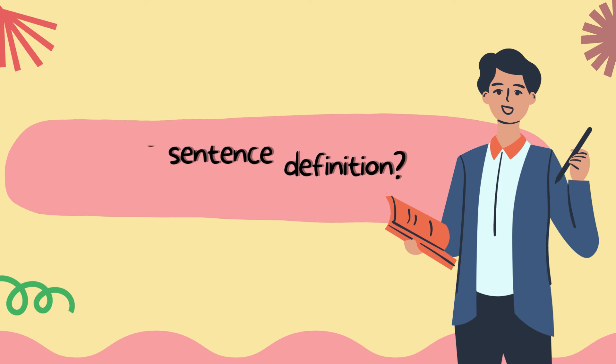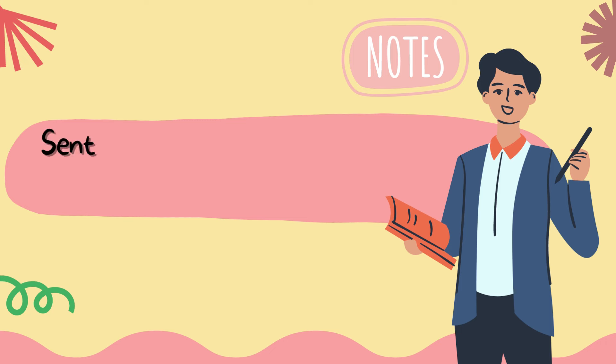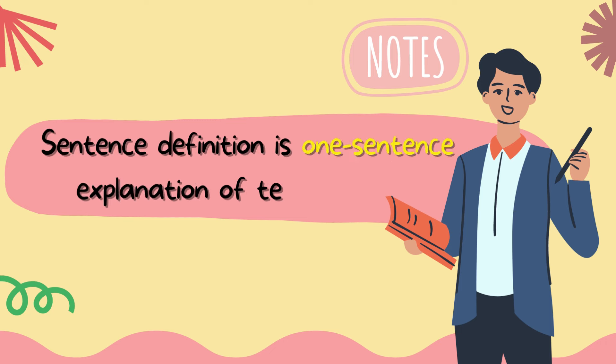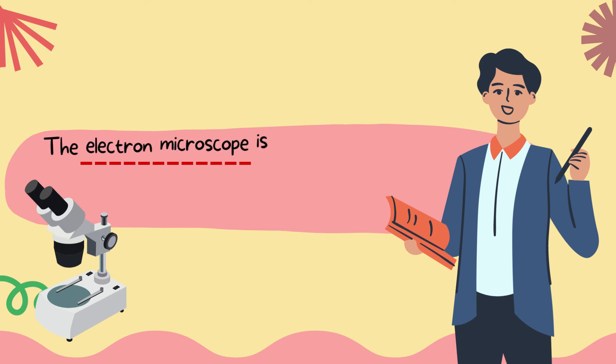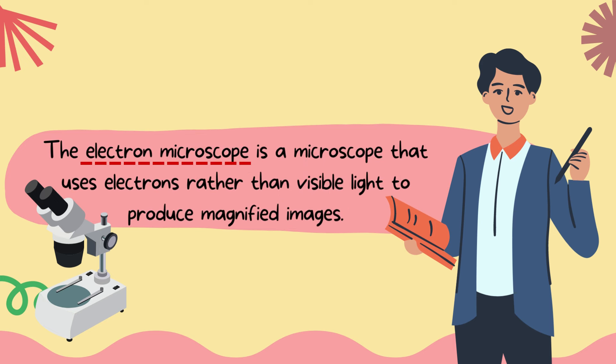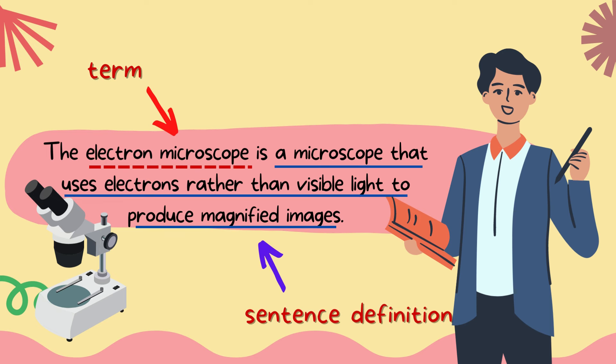What is a sentence definition? Sentence definition is a one-sentence explanation of a word or term. For example, an electron microscope is a microscope that uses electrons rather than visible light to produce magnified images. In the example, we present a one-sentence description of how an electron microscope differs from a normal microscope.